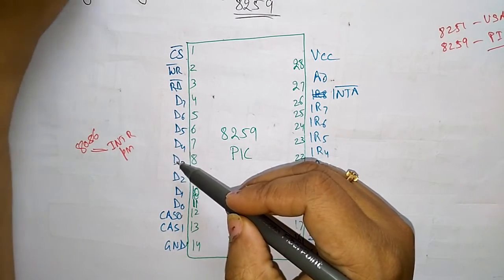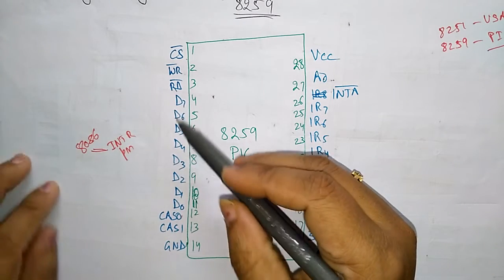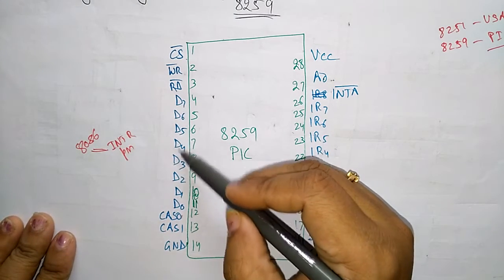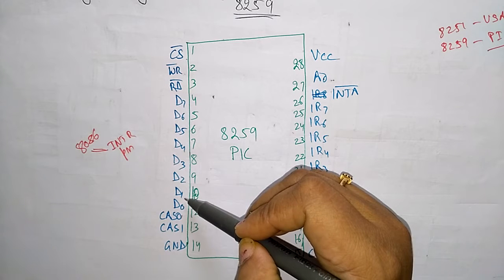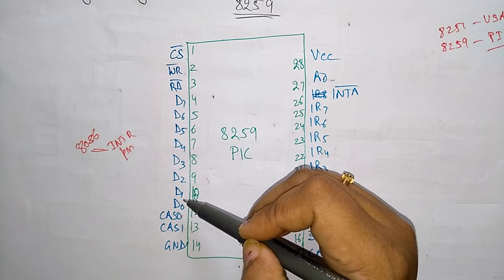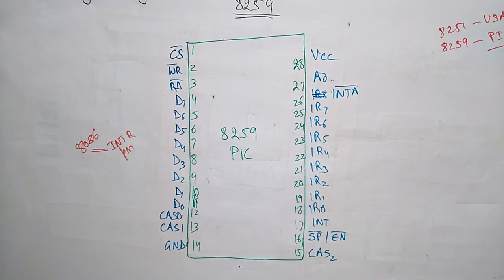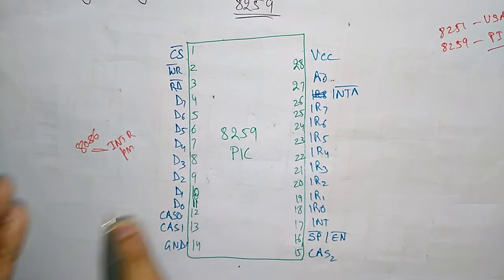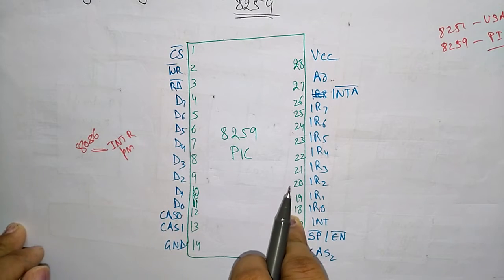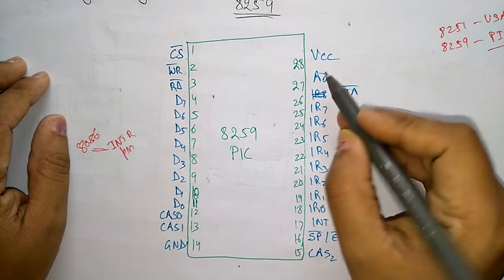Now let us see D0 to D7. These wires are connected to the system bus. The system bus consists of data bus, control bus, and address bus. So these wires are connected to system bus and are used by the microprocessor to read or write the internal registers of 8259. So whatever the internal registers that are present in 8259, the processor will read or write the internal registers of 8259.